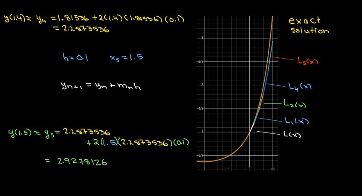And then use the same formula to get y sub 5. And then I am now at x equals 1.5. So this is my approximation then for y of 1.5. That's what we were trying to find.